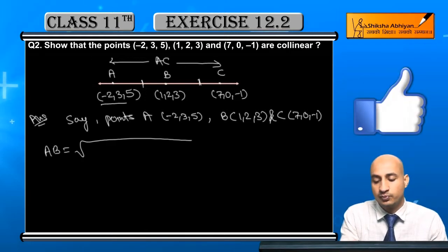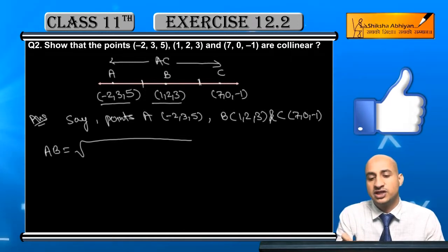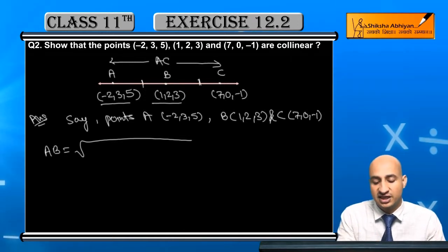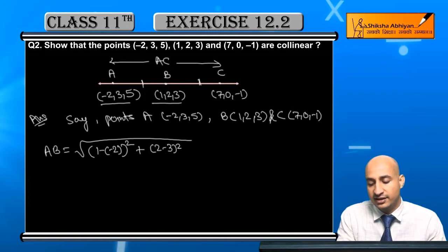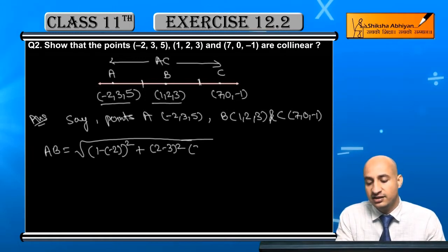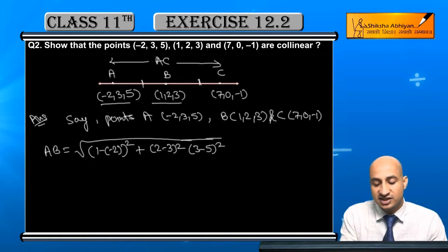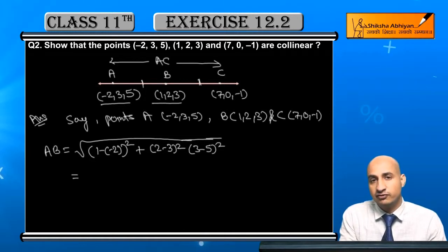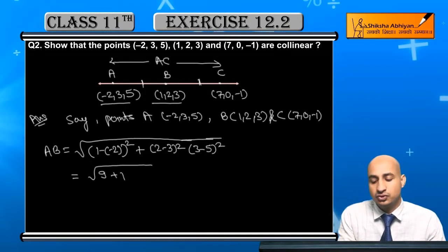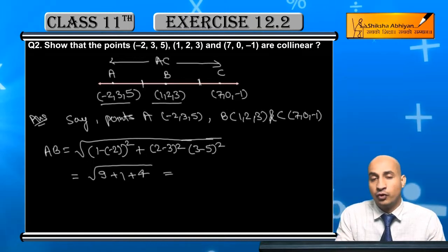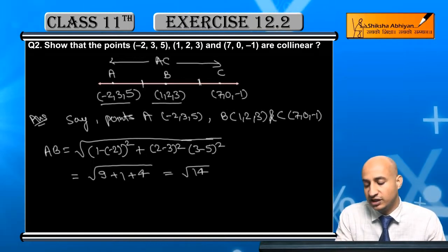Therefore, अगर मैं AB का distance निकालूँ तो B की coordinates को x2 y2 z2 और A की coordinates को x1 y1 z1 consider करूँगा। So this is: square root of (1 minus minus 2) squared + (2 minus 3) squared + (3 minus 5) squared = square root of 9 + 1 + 4 = square root of 14 units.